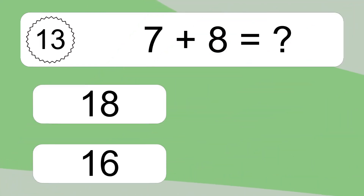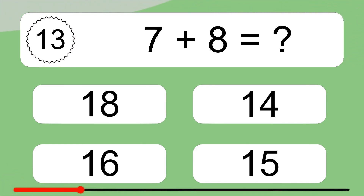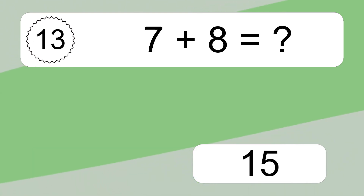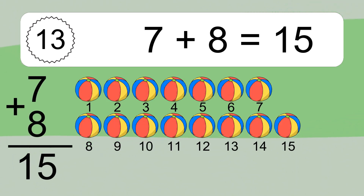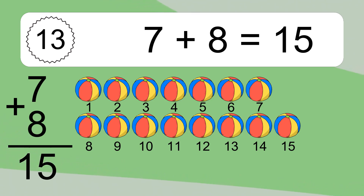7 plus 8 equals what? 1, 2, 3, 4, 5, 6, 7, 8, 9, 10, 11, 12, 13, 14, 15.